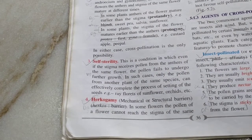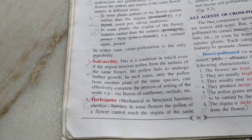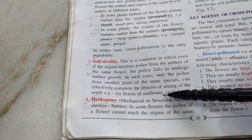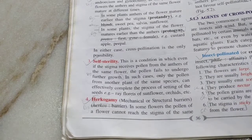This ensures that only if the pollen grain is from a different flower of another plant of the same species can seed formation happen. Examples of this are the ray florets of sunflower, which are neuter flowers, and also orchids.